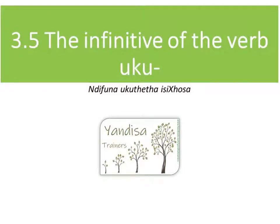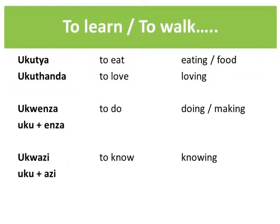The infinitive form of the verb uses the prefix 'oku'. The infinitive is expressed as 'to learn', 'to walk', 'to eat', and quite often follows another verb — for example, 'I want to learn' or 'I want to walk'. It also creates something called a verbal noun.